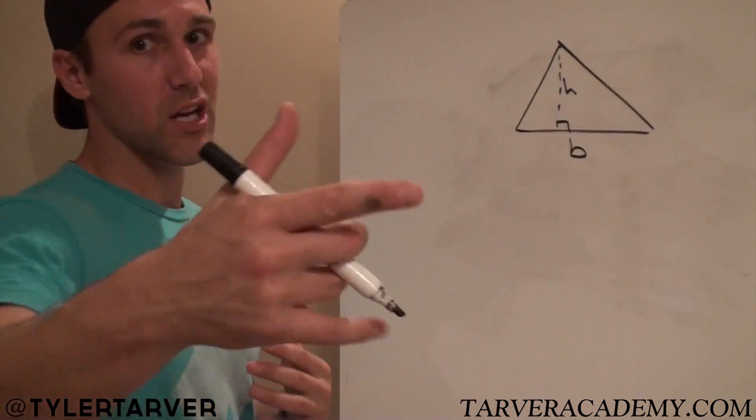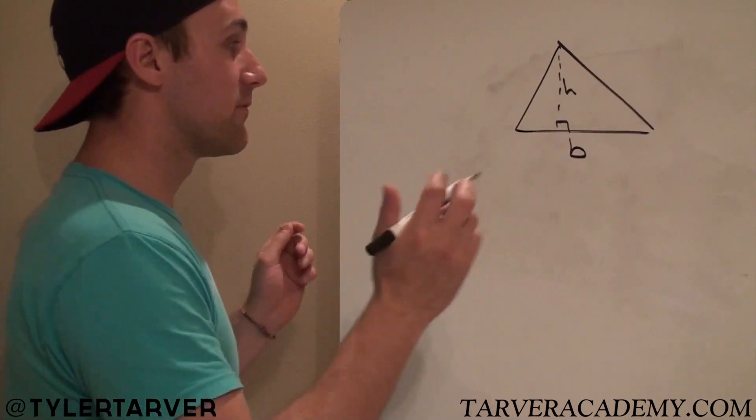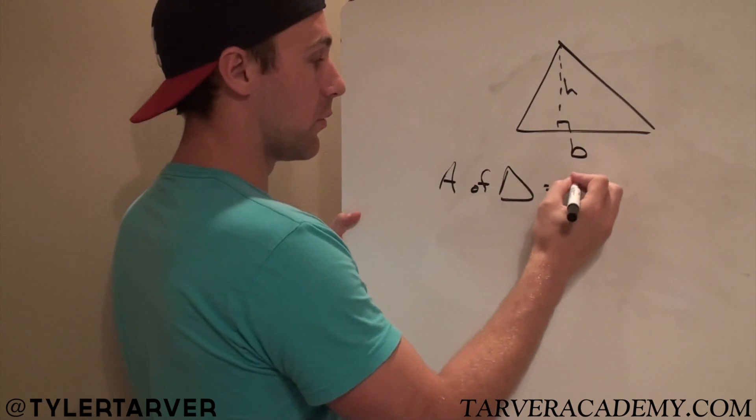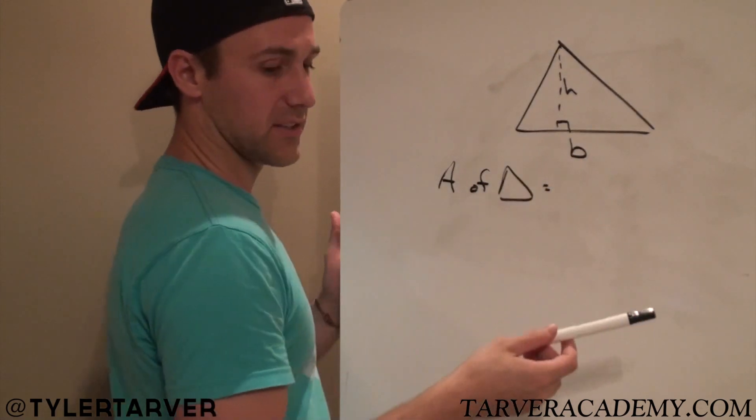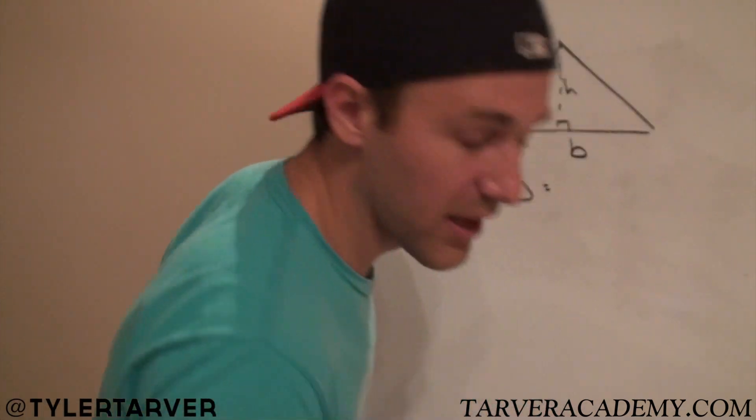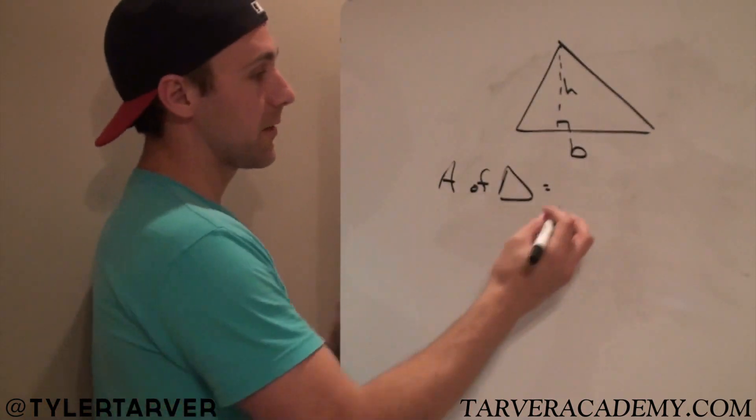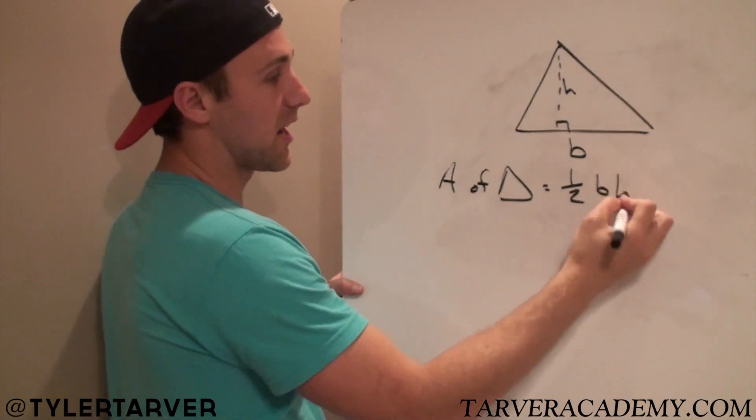Just whatever information you get, use it. The formula for area of a triangle is one-half base times height. That's bad that I forgot that. Oh no, I'm just kidding. One-half base times height.